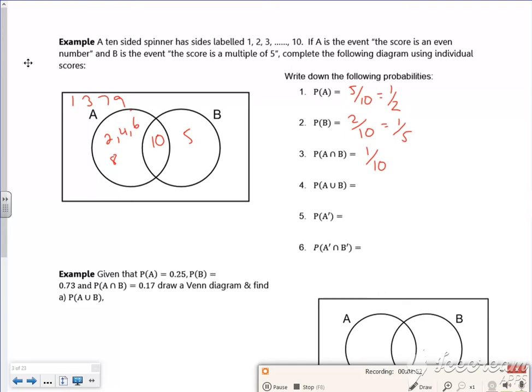A or B is the 6 of them, 1, 2, 3, 4, 5, 6. 6 out of 10, so 3 fifths.